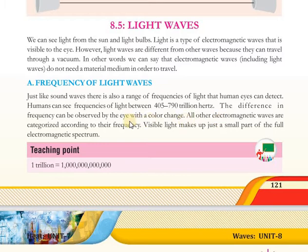Electromagnetic waves جو ہے ان کی categorization ہوئی ہے according to their frequency. Visible light پورے electromagnetic spectrum کا بہت چھوٹا سا حصہ ہے۔